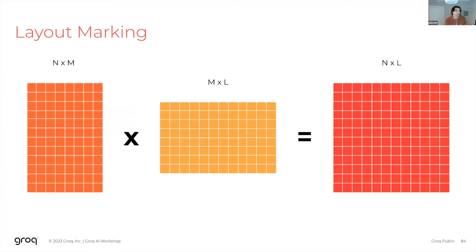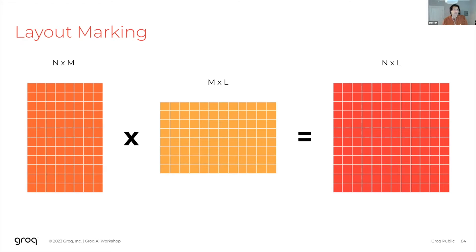The middle end is what looks most like a conventional compiler — more specifically, a SIMD-diving compiler. It takes G10 operations and tiles them into 320-element vectors. We call this layout marking. We then translate these tiled operations into a lower-level representation that resembles the instructions available on the different functional units.